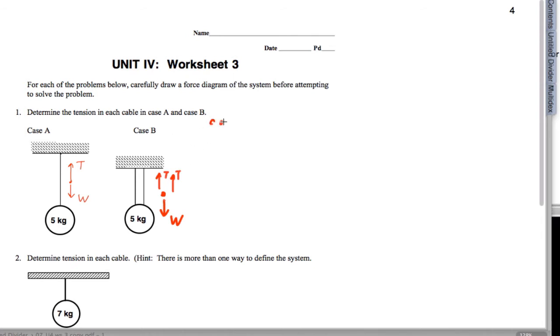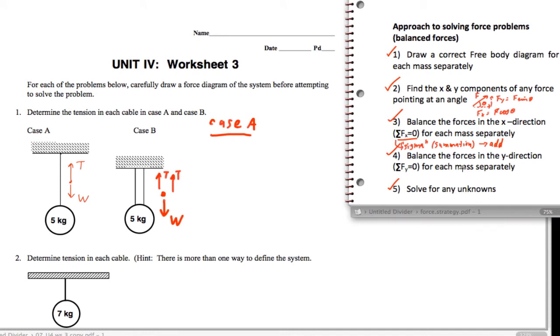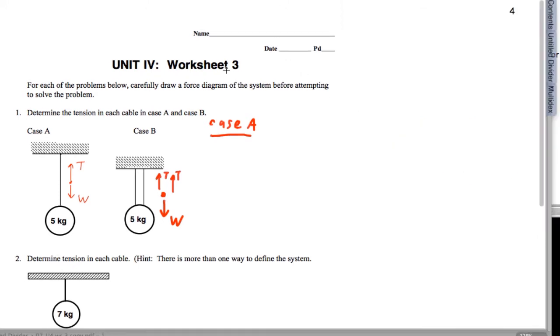So let's go ahead. We'll do case A, where now we will balance forces in the y direction. And we do that by looking at the picture and reading the equation off the picture. So I have a positive tension pointing up. I have the downward force of gravity pointing, well, downwards. And the effect is the forces balance.